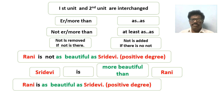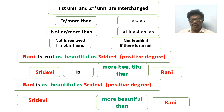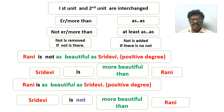Another example: 'Rani is as beautiful as Sri Devi' — it is in positive degree, we have to change it into comparative degree. First, interchange the units. Next, there is 'as...as', so we write 'than' — we have written 'more beautiful than'. In the sentence there is no 'not', so we add 'not'. The answer is: 'Sri Devi is not more beautiful than Rani'.